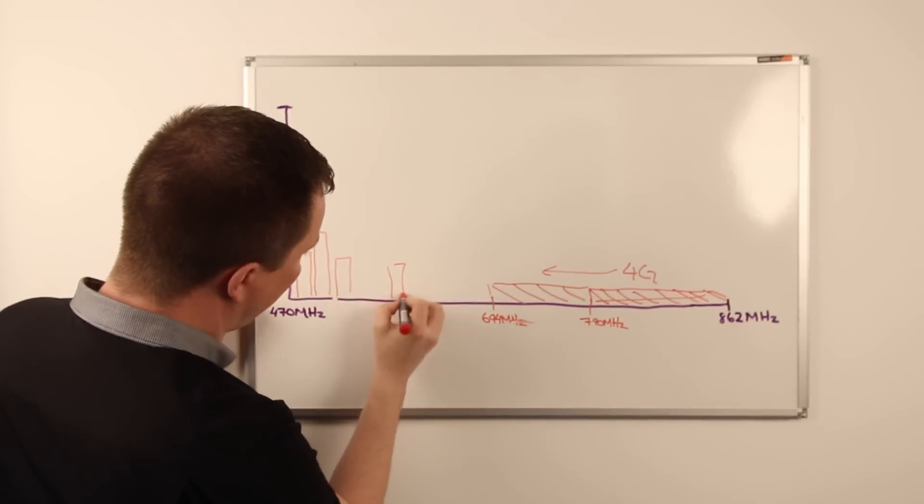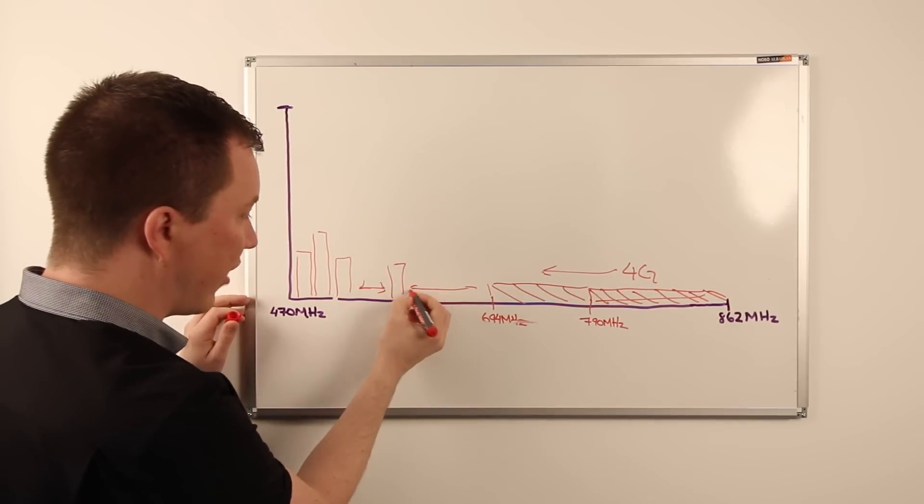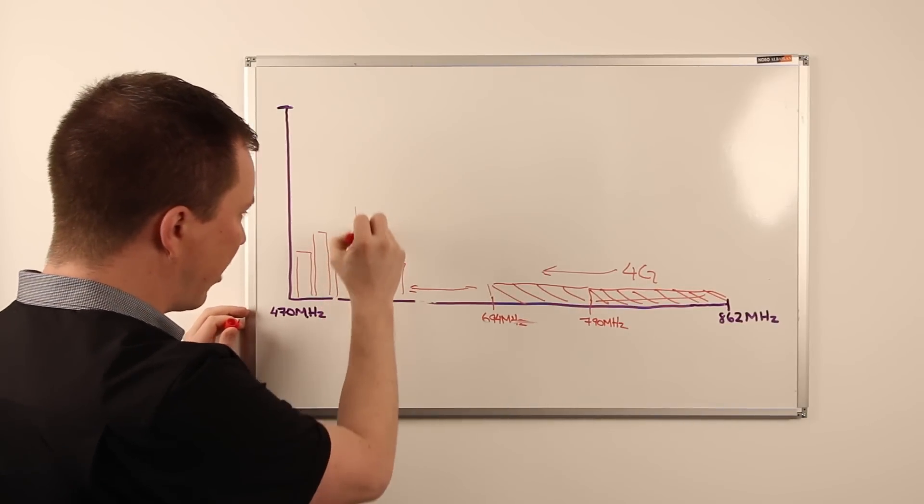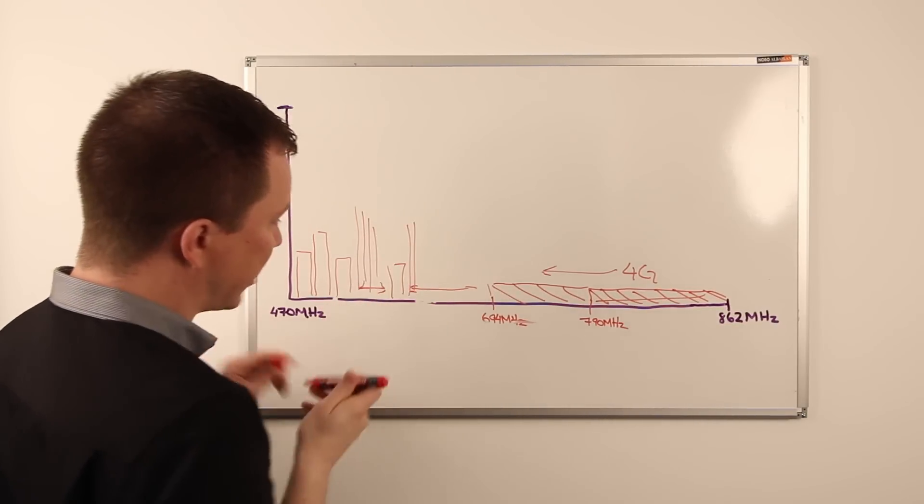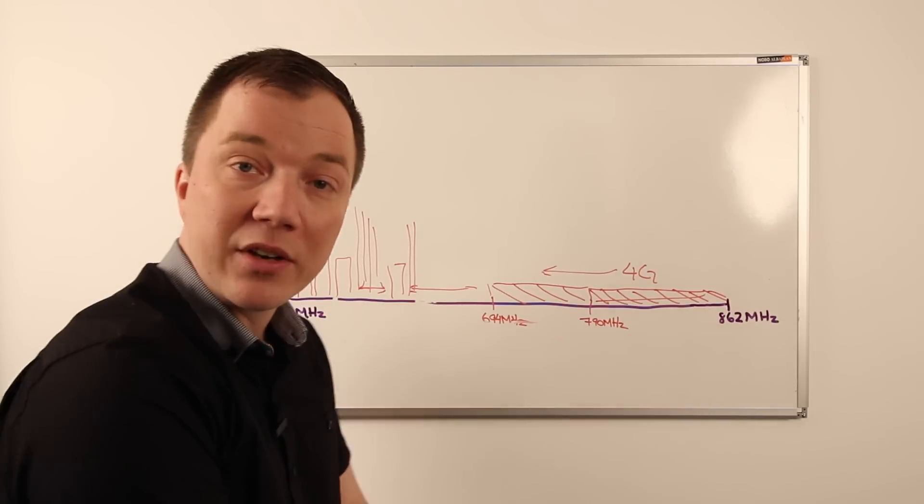So this remaining white space that's left to us—I'm obviously just drawing it theoretically in here—this is where we need to fit our radio microphone channels. And previously we had roughly 400 megahertz of spectrum.